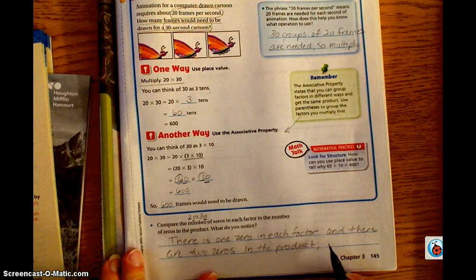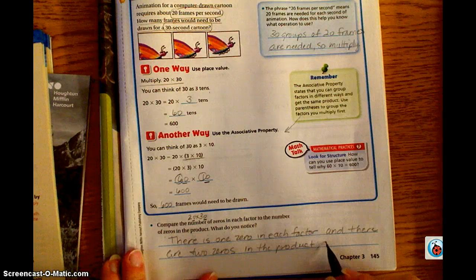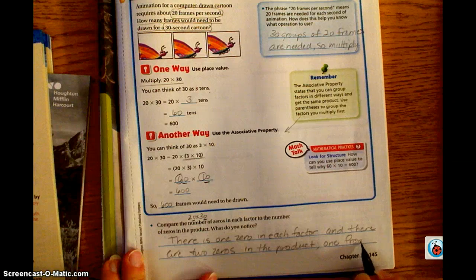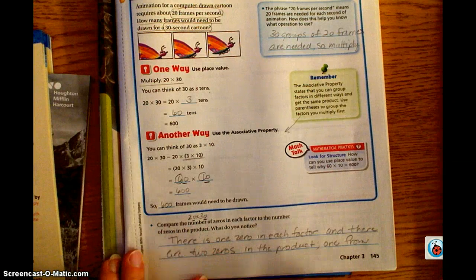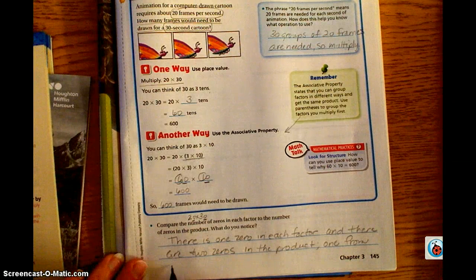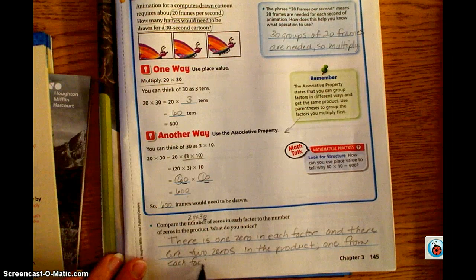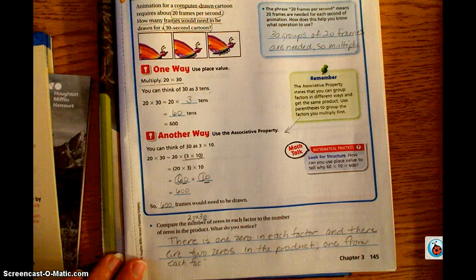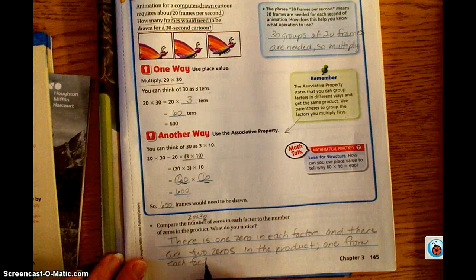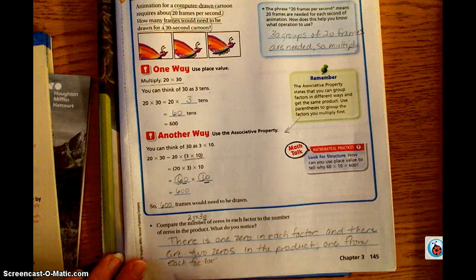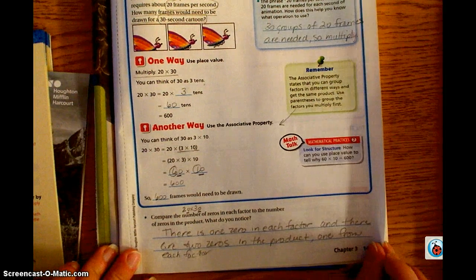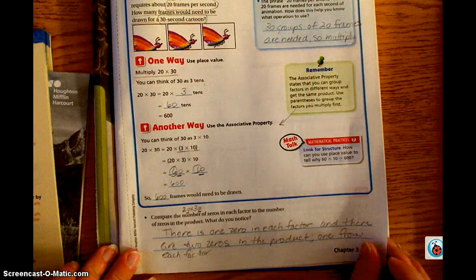We also know that one zero from each factor goes into the final product. So one from each factor. So that was place value and then associative property.